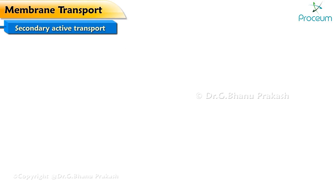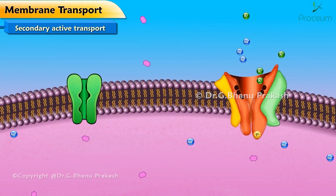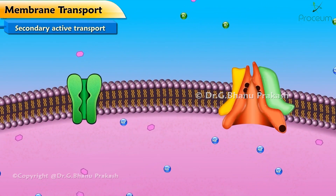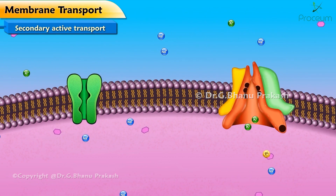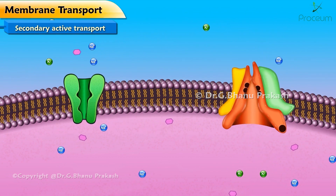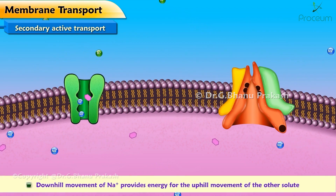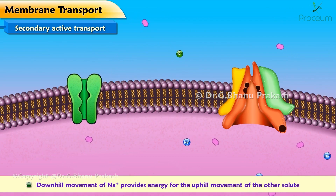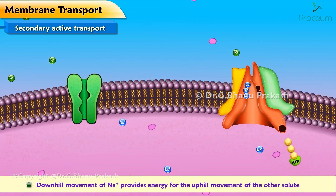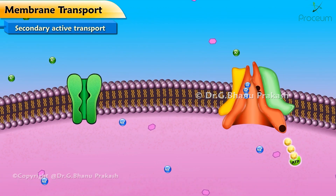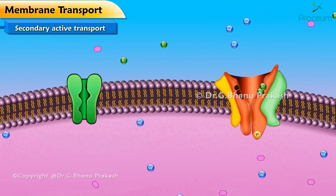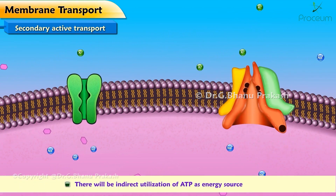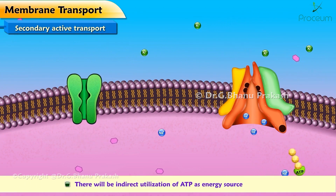Now that we've talked about primary active transport, let's discuss secondary active transport. The movement of two substances simultaneously across the cell membrane, indirectly coupled to ATP hydrolysis, is secondary active transport. One substance, usually Na+, moves down its concentration gradient, and this drives the uphill transport of the other substance against its concentration gradient. ATP is not used directly; instead, it is used indirectly by the Na+ ion concentration gradient across the cell membrane.